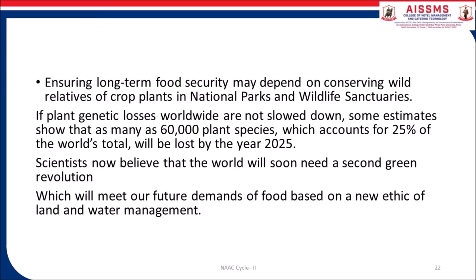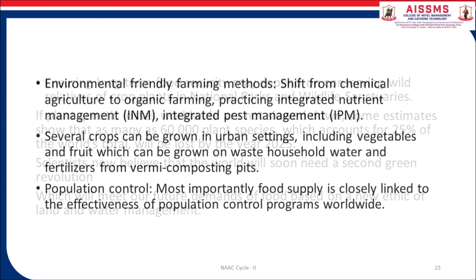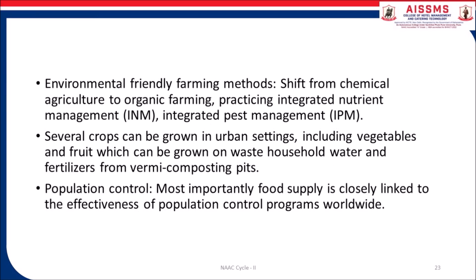If plant genetic losses worldwide are not slowed down, some estimates show that as many as 60,000 plant species, which account for 25% of the world total, will be lost by the year 2015. Scientists now believe that the world will soon need a second green revolution, which will meet our future demand of food based on new ethics of land and water management. Environmental friendly farming methods — shifting from chemical agriculture to organic farming, practicing integrated nutrient management and integrated pest management will lead to successful farming.